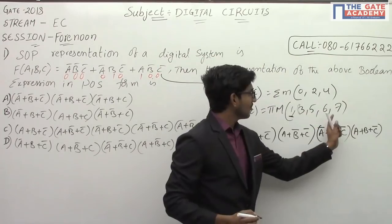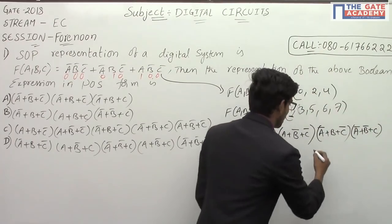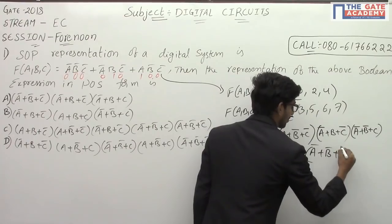At the same time, for 6 which is 1,1,0: A̅ + B̅ + C. For the final term 7: A̅ + B̅ + C̅.